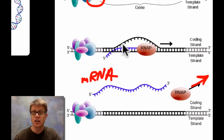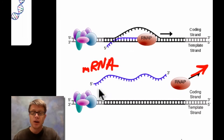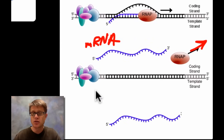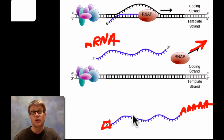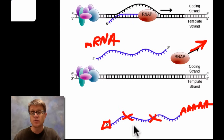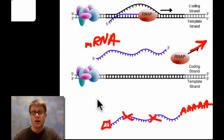And so we have this initiation, elongation, and then finally termination and the creation of that messenger RNA. Now in us we're going to do some things to it. We're actually going to put a 5 prime cap on one side. We're going to put a poly-A tail, which is just a bunch of adenines in a row. Another thing that we'll do inside us is that we're going to get rid of introns. Introns are sections that don't actually code for a gene. So we'll get rid of those and then we'll splice together that messenger RNA.